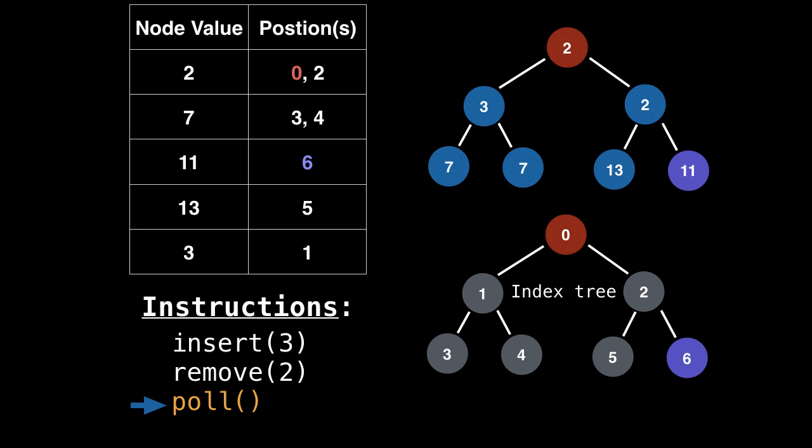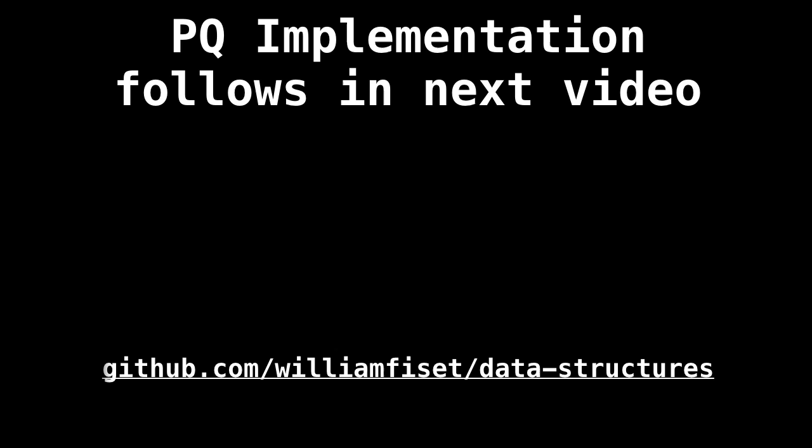The last instruction says to pull. So get the value at the root, which is two and swap it with 11. Get rid of the two and bubble down 11. So as you can see, we're constantly updating our table, but still doing the same operations. So that's how you do quick removals in a priority queue.